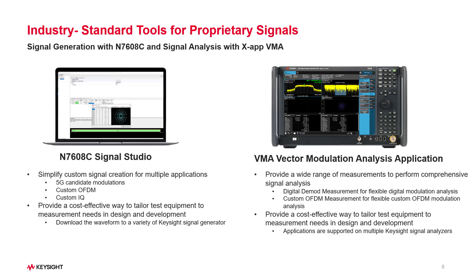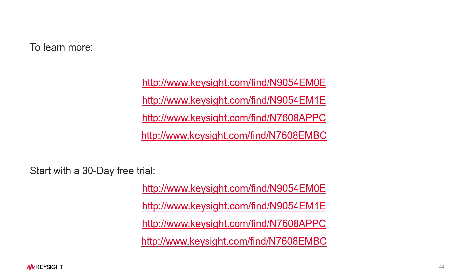Your team can leverage the test system software through all phases of product development, allowing them to move at a faster pace. Whether you run the applications on the benchtop X-Series Signal Analyzer or PXIe instruments, you will get the same results from the development lab into manufacturing. The only difference is the level of performance achieved by the instrument hardware, allowing you to choose the level of performance necessary for your application. In summary, the X-app VMA application provides a comprehensive set of tools for demodulation and signal analysis, enabling you to measure and troubleshoot your DUT in different scenarios with confidence. To learn more and to download a free trial, visit us at these websites. Thanks for watching.